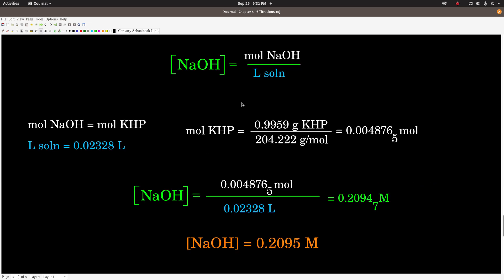So here's how we do the calculation. Definition of concentration of molarity is moles over liters. Because it's a one-to-one mole ratio, the moles of sodium hydroxide is equal to the moles of KHP. And we were given the liters of solution, the bottom part here. We were told 23.28 milliliters, which moved the decimal over three. It's 0.02328 liters. To get the moles of KHP, we just take the mass, divide by the molar mass.